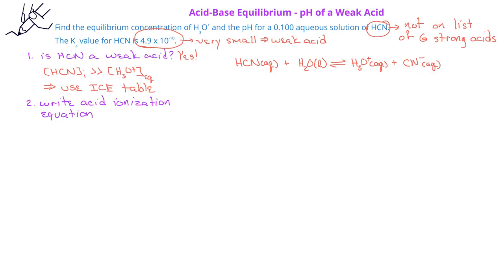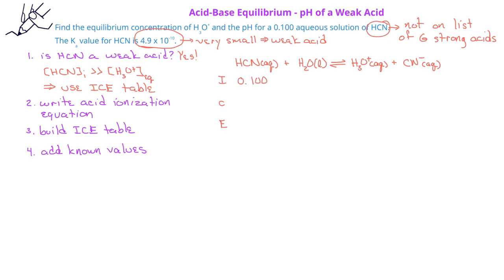Now that we have the acid dissociation equation, we can construct an ICE table. Once we have the ICE table constructed, we can enter the known initial values. In this case, we know that the initial concentration of HCN is 0.100, and we're assuming that the initial concentrations of the hydronium ion and the cyanide ion on the product side will be zero.